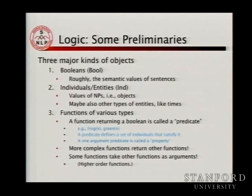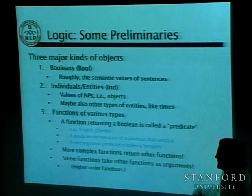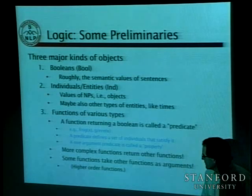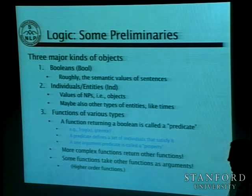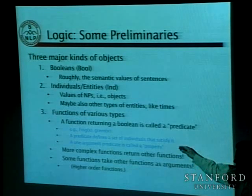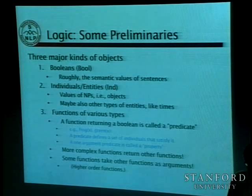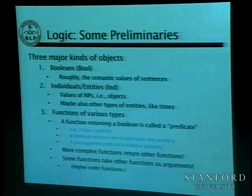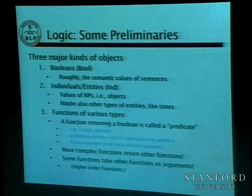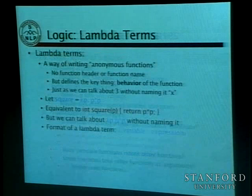What we're going to have underlying here: Booleans, individuals — things like people or times — and functions of various kinds or predicates such as frog(x) or green(x). Predicates define sets: the individuals that satisfy the predicate. If the predicate has only one argument, I'm going to call them properties. We can make more complex functions out of simple functions, and the techniques people use to represent natural language meanings make quite a lot of use of higher-order functions.